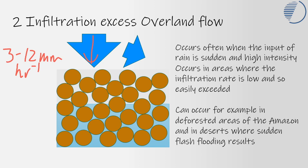If you have very intense rainfall, as often happens in deserts and dry environments, you don't get infiltration occurring. The input of rain is so sudden and the storms are so sudden that the water will simply run off — and that's why we get flash flooding in deserts. That's why wadis, the dry river valleys in the desert, in the Sahara, suddenly fill with water, because water can't move into the soil fast enough, even though there are empty pore spaces available.